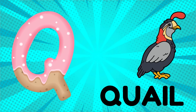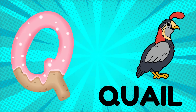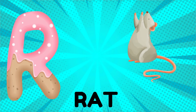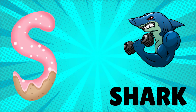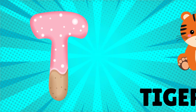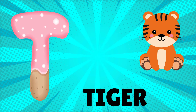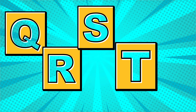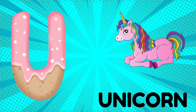Q is for quail, qu-qu-quail. R is for rat, r-r-rat. S is for shark, s-s-shark. T is for tiger, t-t-tiger.